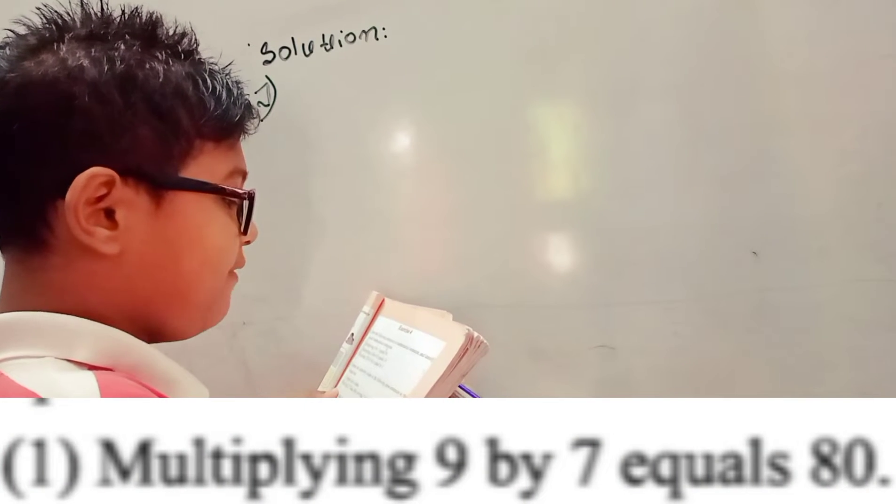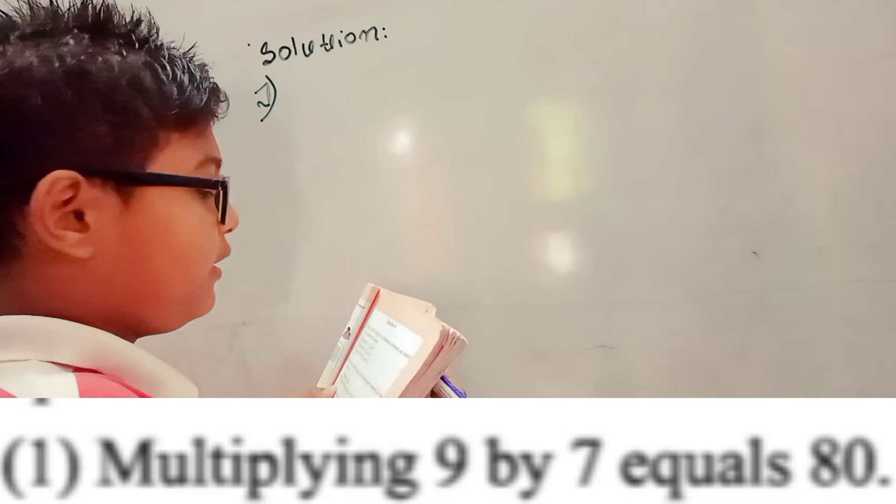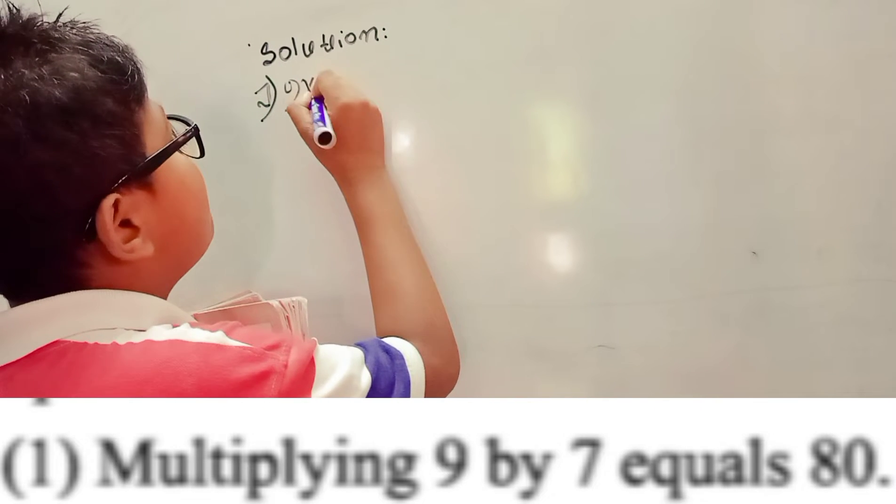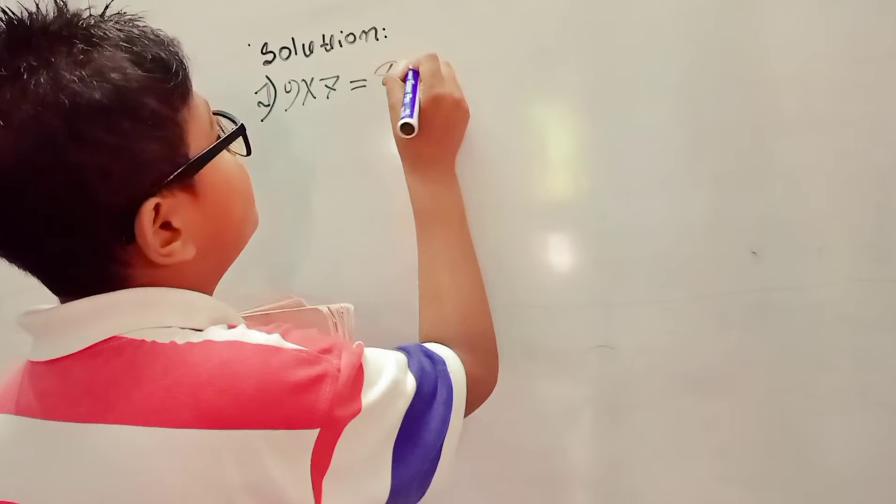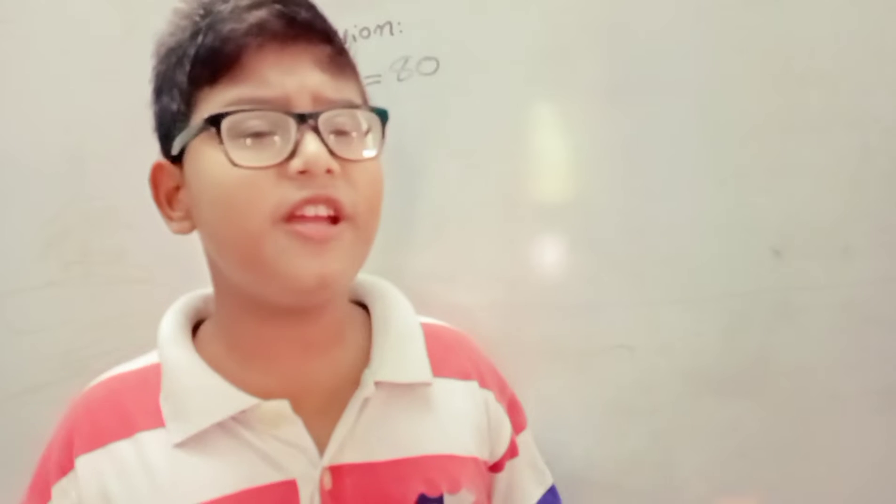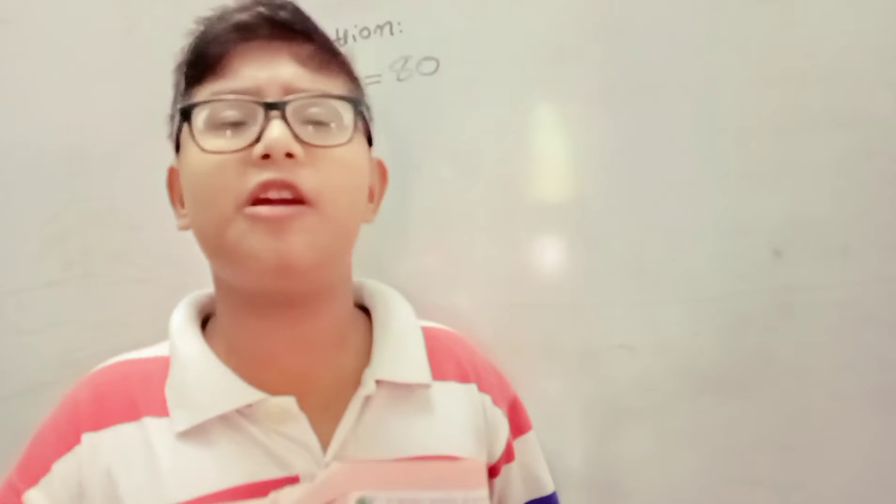Multiplying 9 by 7 equals 80. So we can write 9 times 7 equals 80. So this sentence is not true. Because we know 9 times 7 equals 63.